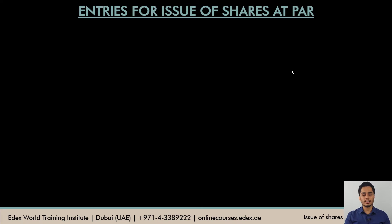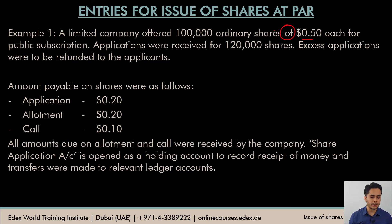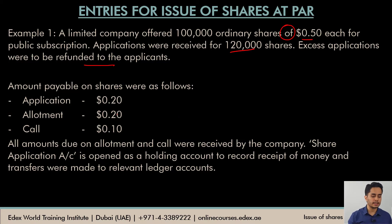Now let's directly understand journal entries using an example. A limited company offers 100,000 ordinary shares of $0.5 — meaning $0.5 is the face value or par value — for public subscription. Applications were received for 120,000 shares, which is a case of oversubscription. Excess applications will have to be rejected and the amount refunded. Amounts on shares were payable on an installment basis: application $0.2, allotment $0.2, and finally call money $0.1.